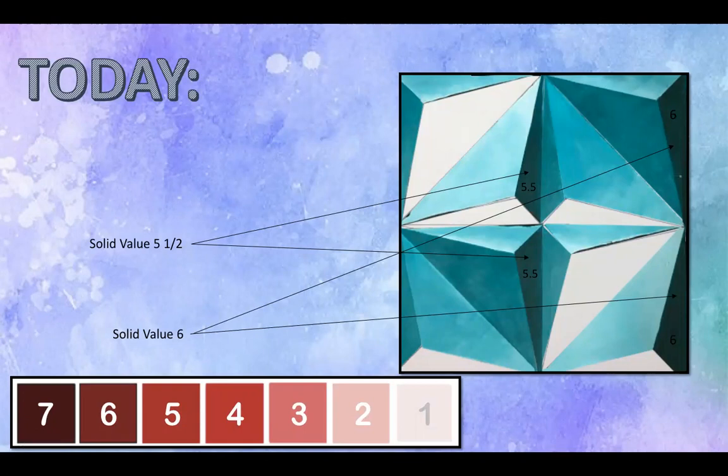Now once again, when you're adding these darker values, it can get really easy to mess up your other sections because it can cover it up. So you have to be really careful going along these edges, using your little brush or using the side of your brush to make these nice crisp lines.